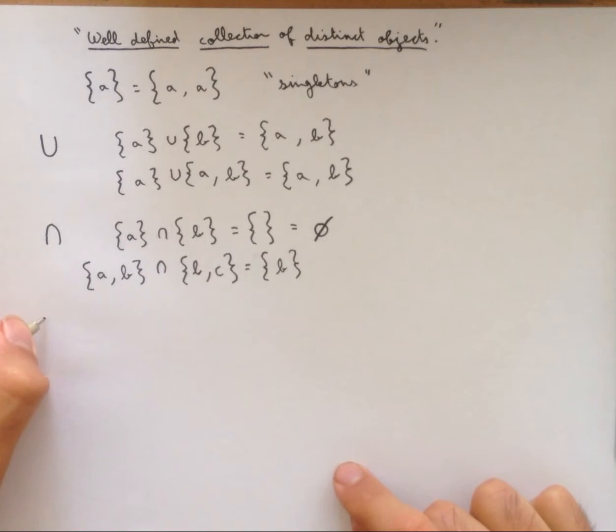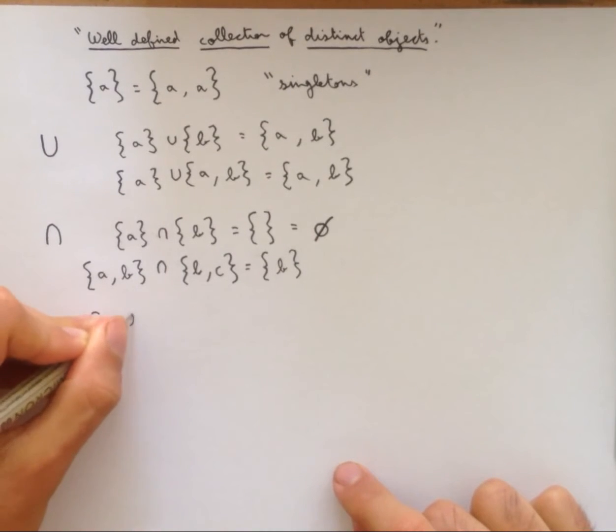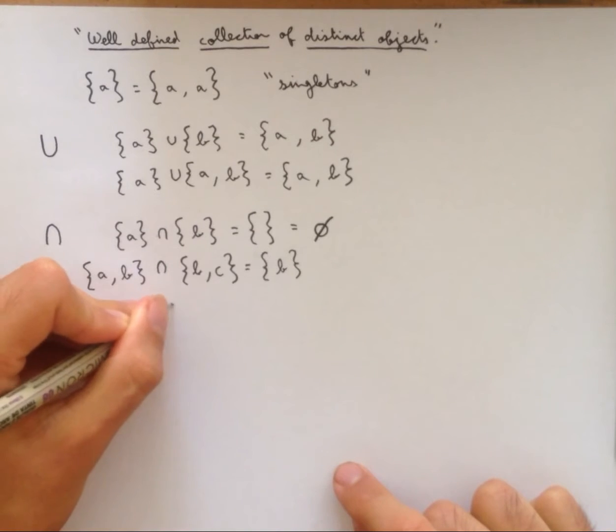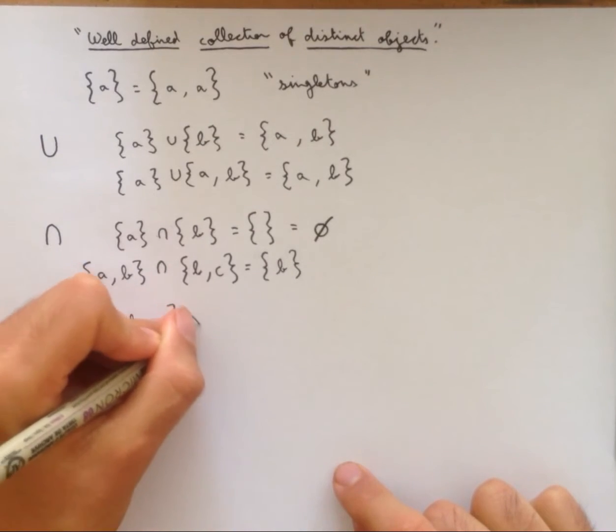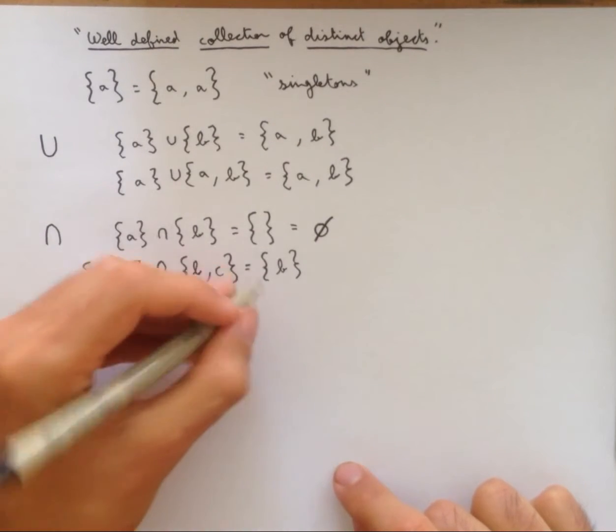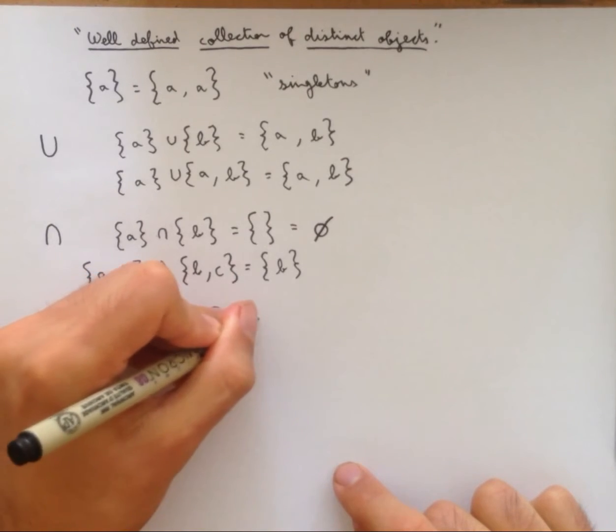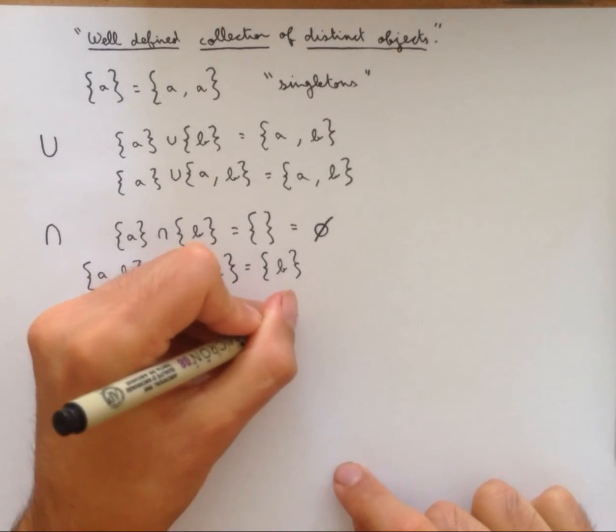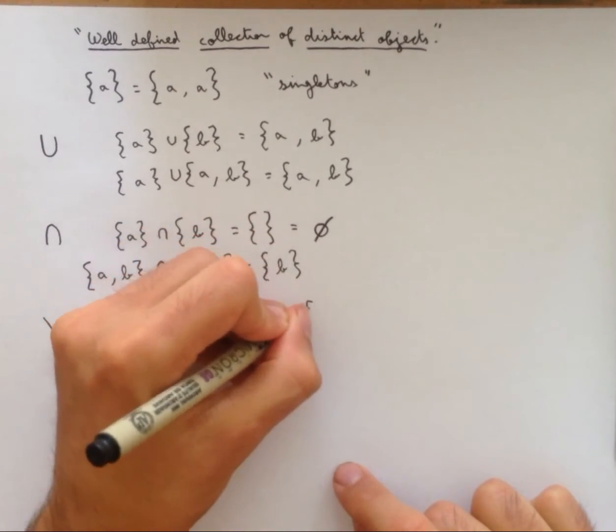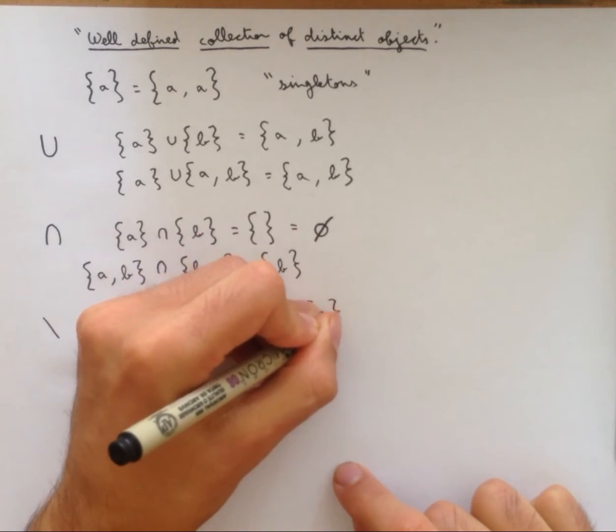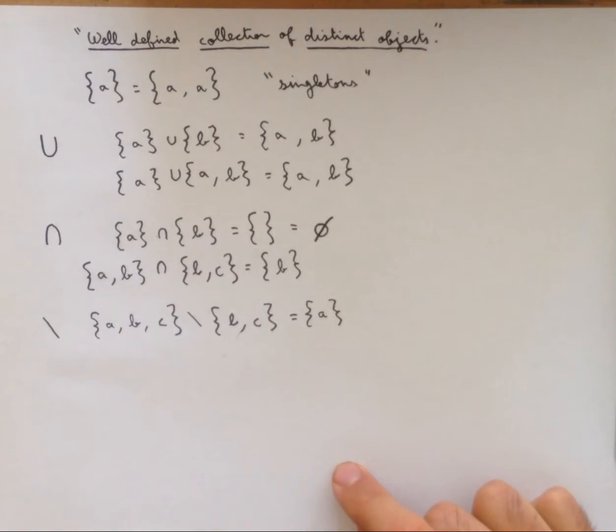Finally, we have the relative complement, which takes everything from a second set and takes it out of the first set. So given a set a, b, c, if we complement the set b, c from it, what we're left with is the singleton a. It's kind of like a minus sign for sets.